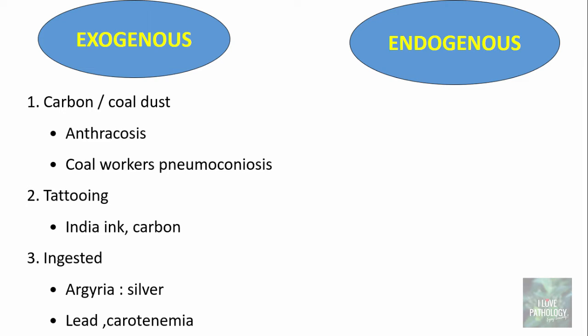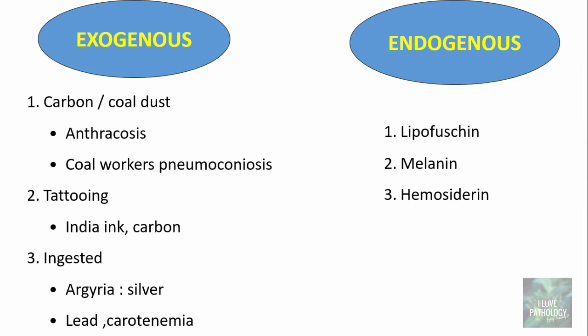The endogenous pigments are those which are derived from or present within the body. These are lipofuscin, melanin, and hemosiderin. We will discuss more about these three endogenous pigments.